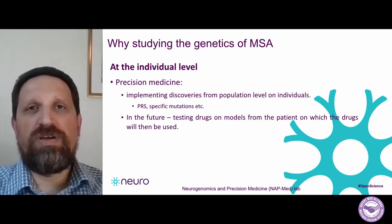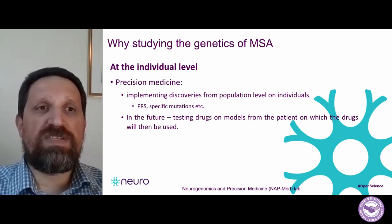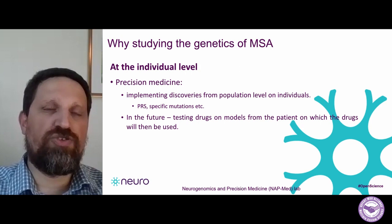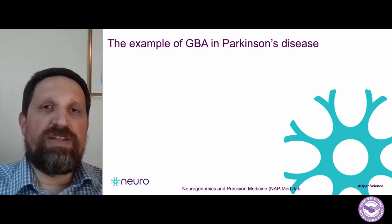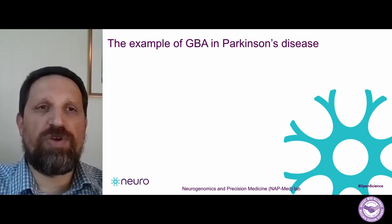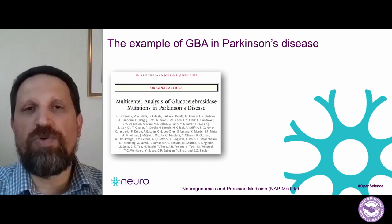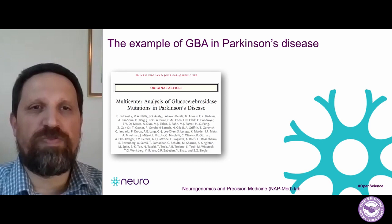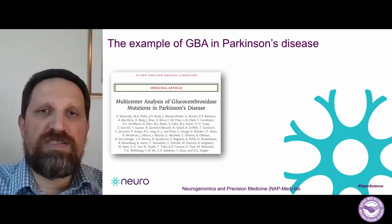Then later on, go back to the patient and give them the drugs that work on the model based on their tissues. This may be the best form of precision medicine — trying the medication on the specific individual we created the model for. To give you an example of how genetics contributed to the understanding of a disease and potential treatment, the best example in Parkinson's disease is GBA. In 2004, this paper on GBA was published. Until then, it was not clear whether mutations in this gene are associated with Parkinson's disease.